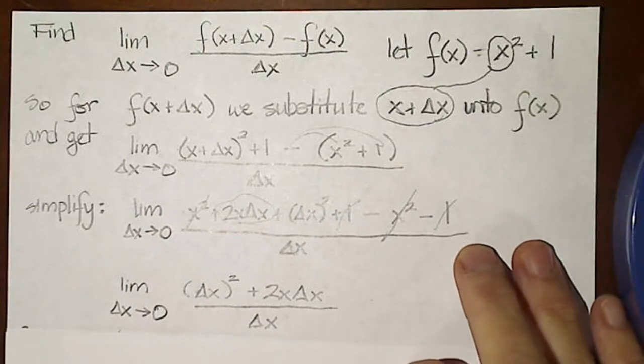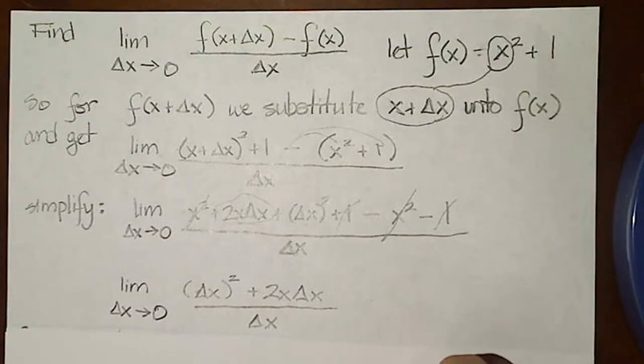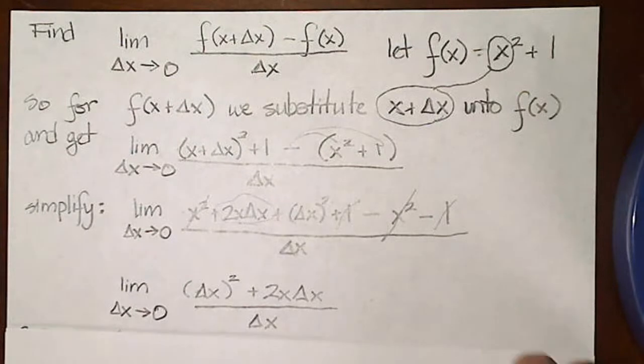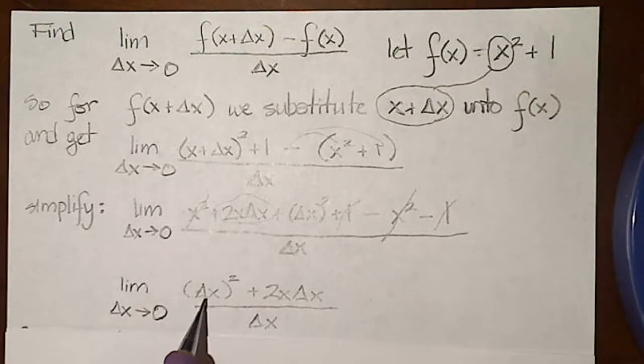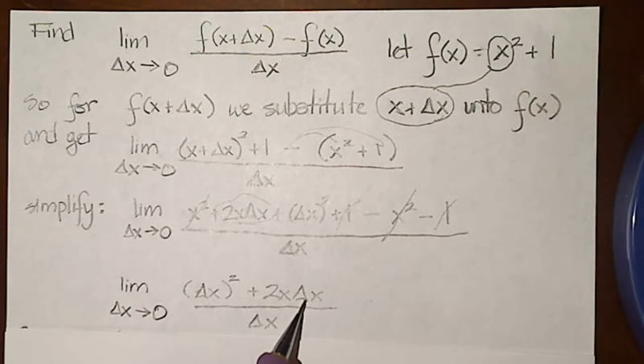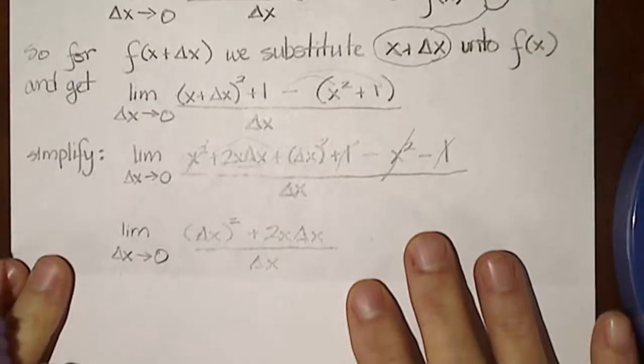Now I look at what I have left: I have the limit as delta x goes to zero of the quantity delta x squared plus 2x times delta x, all that over delta x. And I remember my goal is hopefully to be able to factor out those delta x's in the numerator so I can cancel them with the denominator.